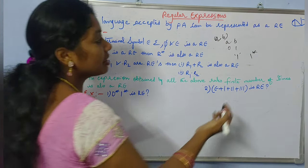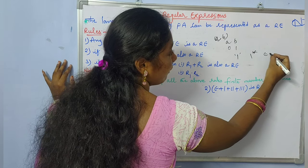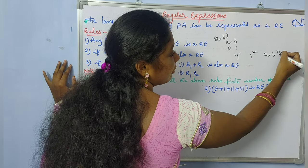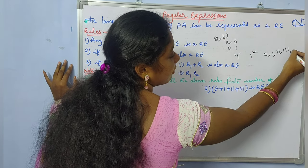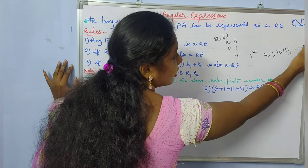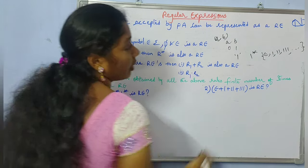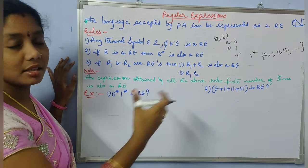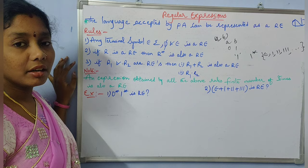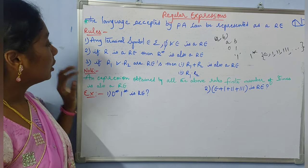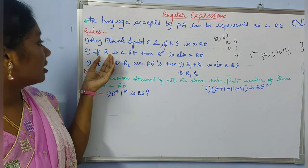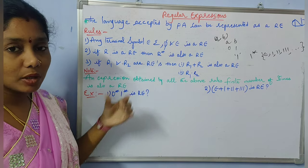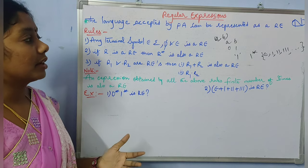What are the elements in 1 star? 1 star means we can have epsilon, 1, 11, 111, and so on. These are all the strings in the closure of 1. So if r is a regular expression, then r star is also a regular expression.